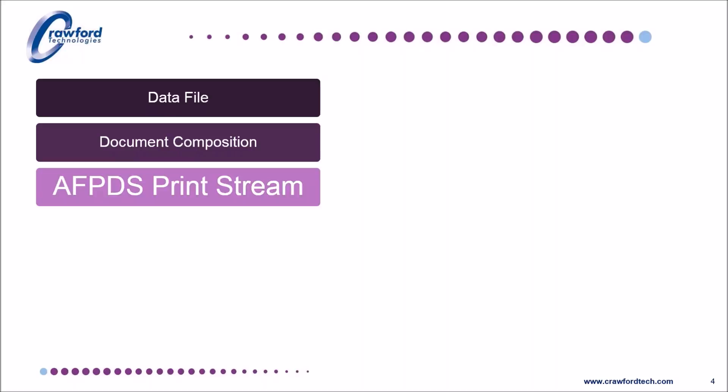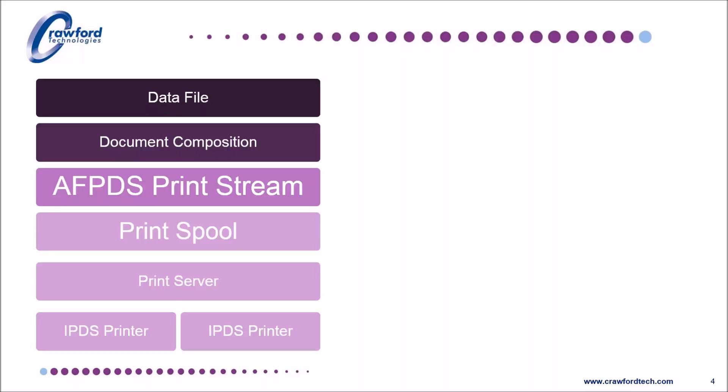The data is sent to a print spooler as an AFPDS print stream, and from there it is sent on to the print server and the printers. This is the full advanced functional presentation AFP architecture. The AFPDS print stream is converted to other formats, including PDF archiving, or sometimes it's just stored straight into an archive without any print or use at all. This archive is then presented to a customer as a mobile or portal application and repurposed on demand. Following this trend, the term AFP now tends to be used to refer to the file format as well as the full architecture.